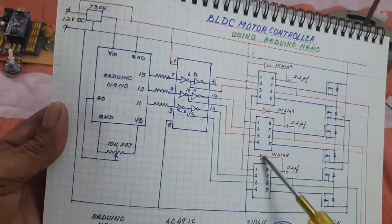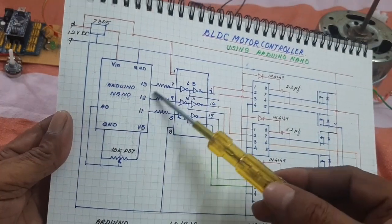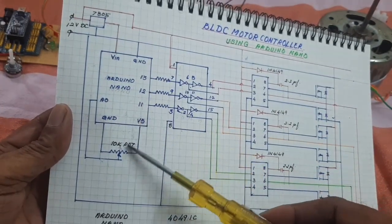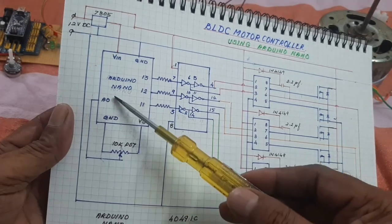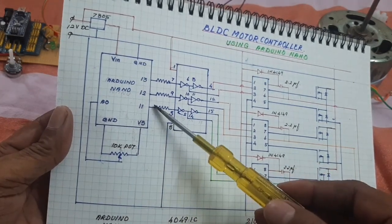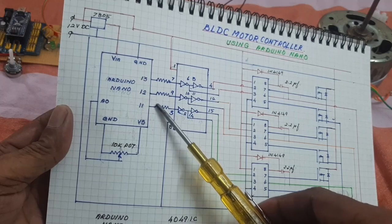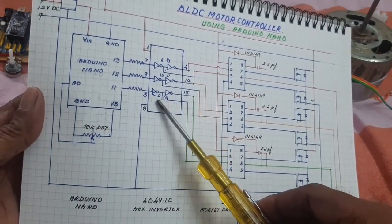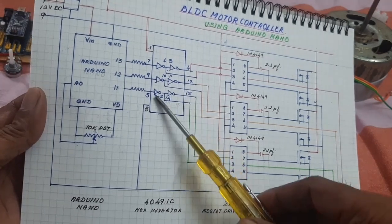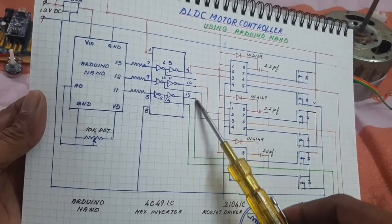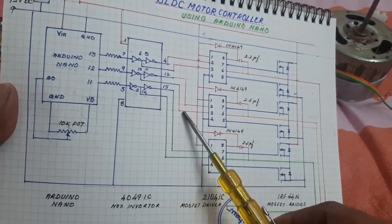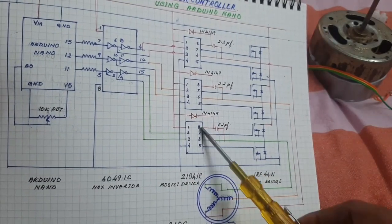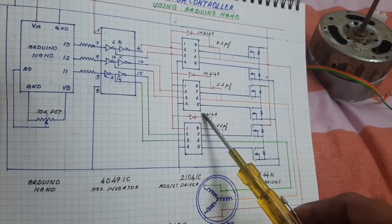Here the output pin 13, 12, 11 and the PWM input pin A0. So the output signal, three-phase signal is given to the hex-inverter. It converts the three signal into high and low signal and then it is given to the MOSFET driver using the IC IR2104.